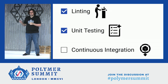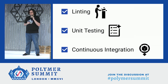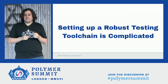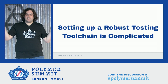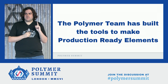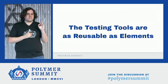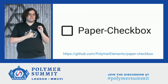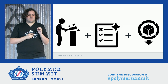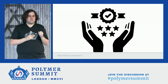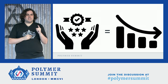We're done with continuous integration. Setting up a robust testing tool chain is super complicated — there's a bunch of tools and configurations spread out across 100 elements, and we on the Polymer team feel that pain because we have to maintain over 100 elements and the tools to make those elements production-ready. So we made sure that the testing process is just as reusable as our elements. 90% of the testing configuration in paper checkbox is a copy and paste into your own element. Now your element can reuse all the same linting, unit testing, and continuous integration tools that we use, and your elements will be just as production-ready and reusable as the Polymer team's elements — saving you time and money on building your applications.